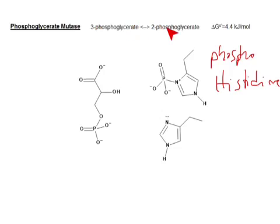Now the reason that we're doing this in the first place is so that we can generate a high energy bond so that we can make our second substrate-level phosphorylation.